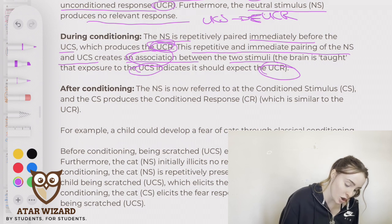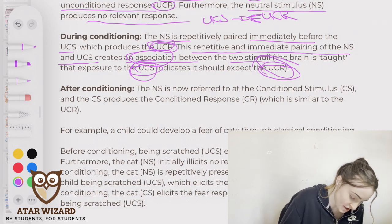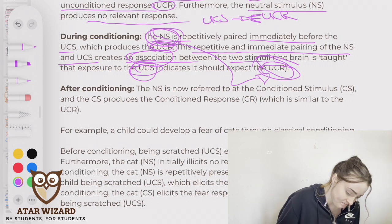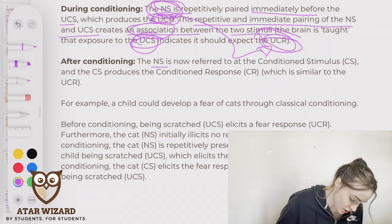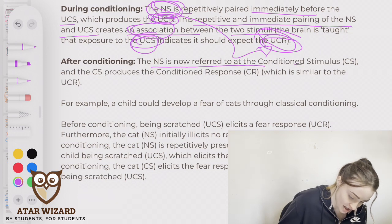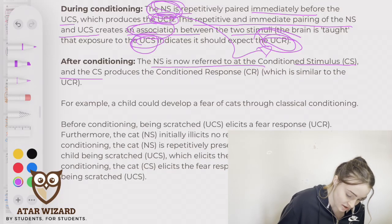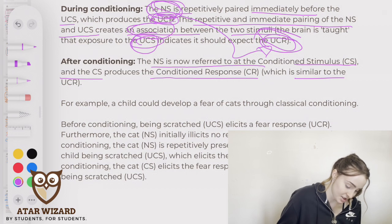The brain is essentially taught that exposure to the UCS indicates it should expect the UCR. Now we're bringing in the association between the neutral stimulus and the unconditioned response. After conditioning, the neutral stimulus is now referred to as the conditioned stimulus, and the conditioned stimulus produces the conditioned response, which is similar to the UCR.